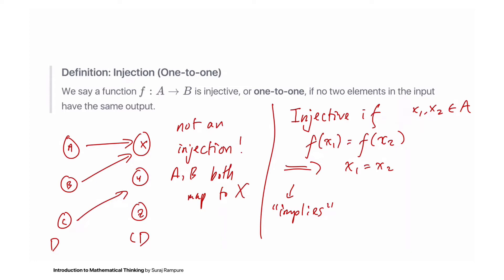To illustrate what's going on here, we have a diagram showing domain and codomain with the relationship between their elements. Both element a and element b map to the same output element x, which is not allowed in an injection — because a function must satisfy that if the outputs are the same, the inputs are the same, and a is obviously not equal to b.